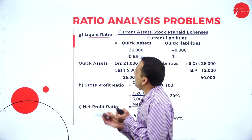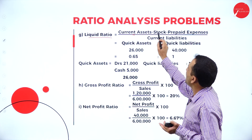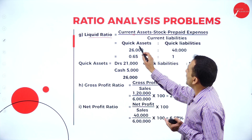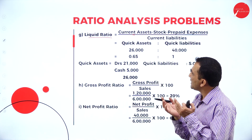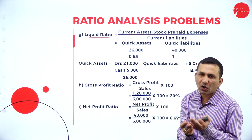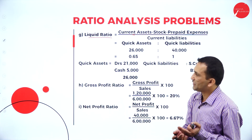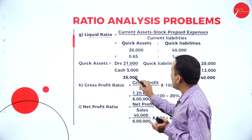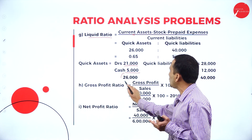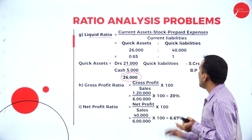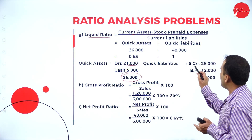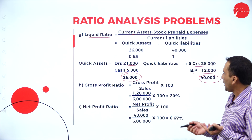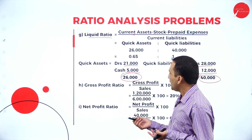Moving to liquidity ratio — current assets minus stock minus prepaid expense, divided by current liability. This is also called the quick ratio or acid test ratio. Quick assets: debtors and cash — total 26,000. Quick liabilities: sundry creditors 28,000, bills payable 12,000, total current liability 40,000. Simplified: 26,000 divided by 40,000.